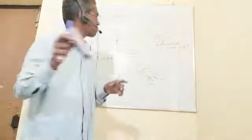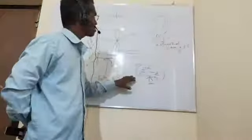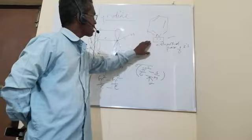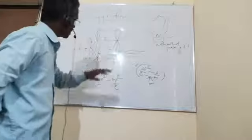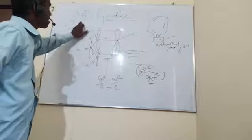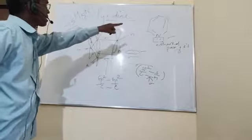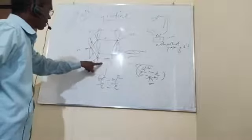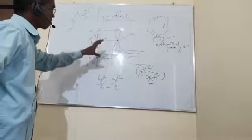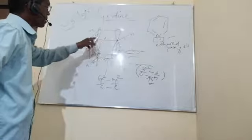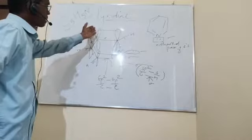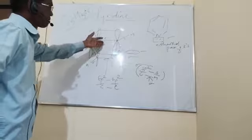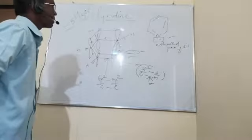We will have further discussion on the physical properties, chemical properties, and the reason behind the basicity of pyridine, and finally its applications. To summarize: pyridine has the formula C5H5N. This covers the hybridization in pyridine, the types of overlaps, hybridization in carbon and nitrogen, formation of sigma bonds, and the pi bonding molecular orbitals. Thank you, take care.